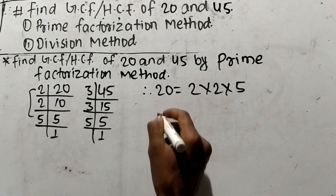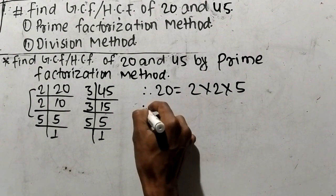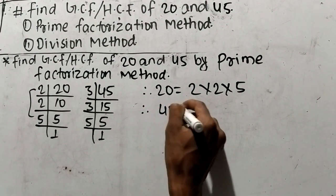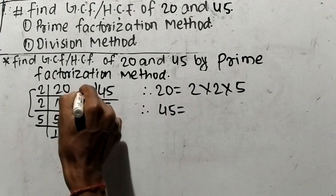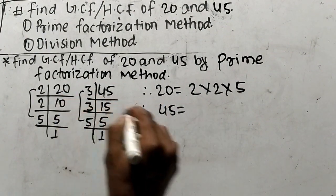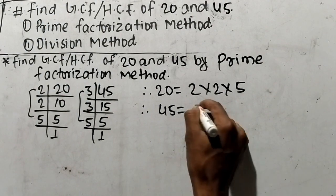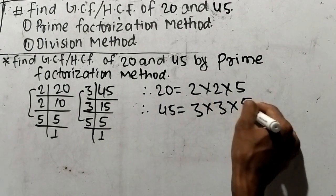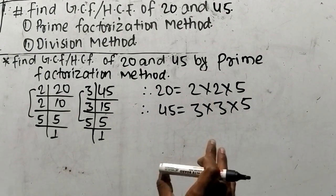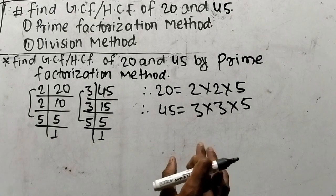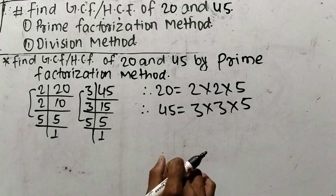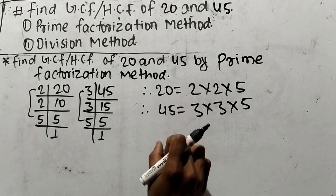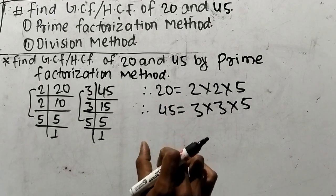In the same way, we can find out the prime factors of 45. From here we can write 45 is 3 times 3 times 5. So we have taken out the prime factors of 20 and 45.